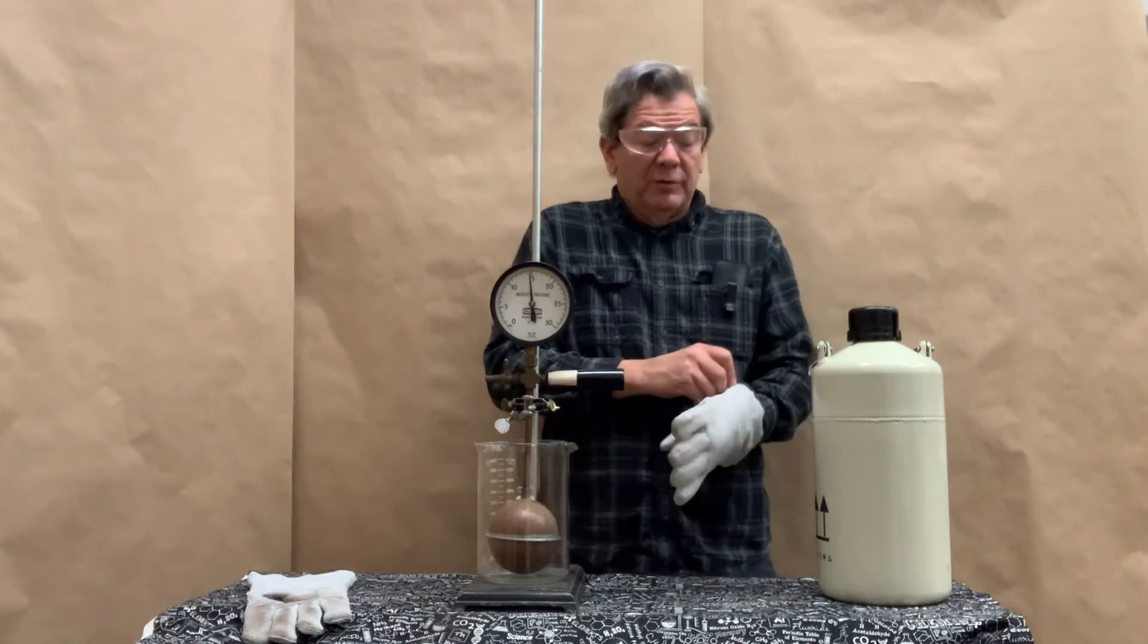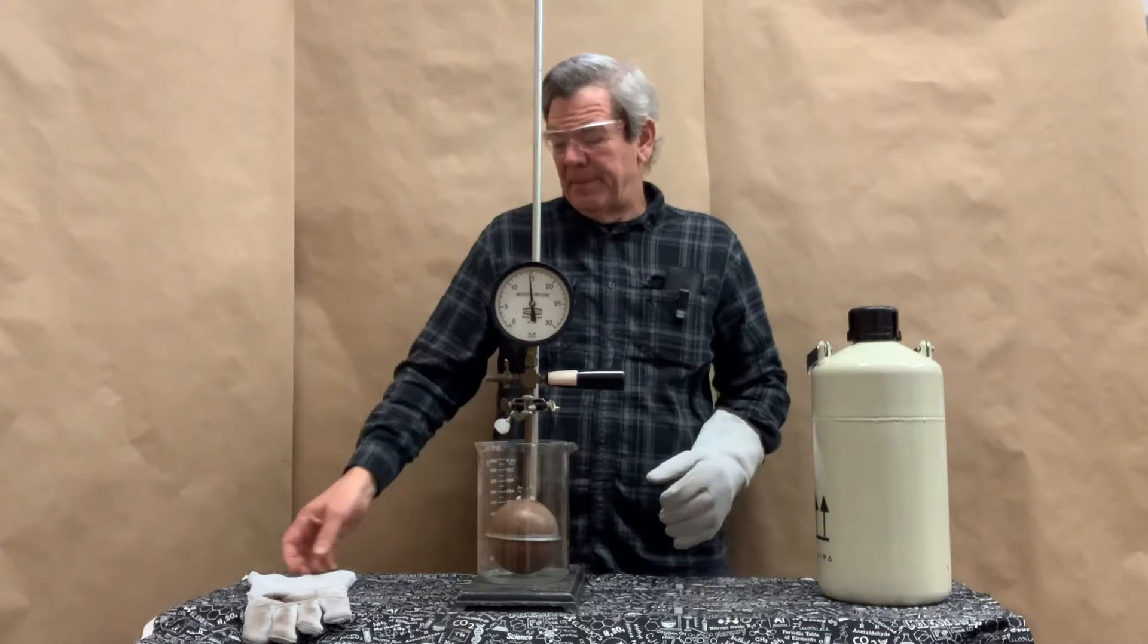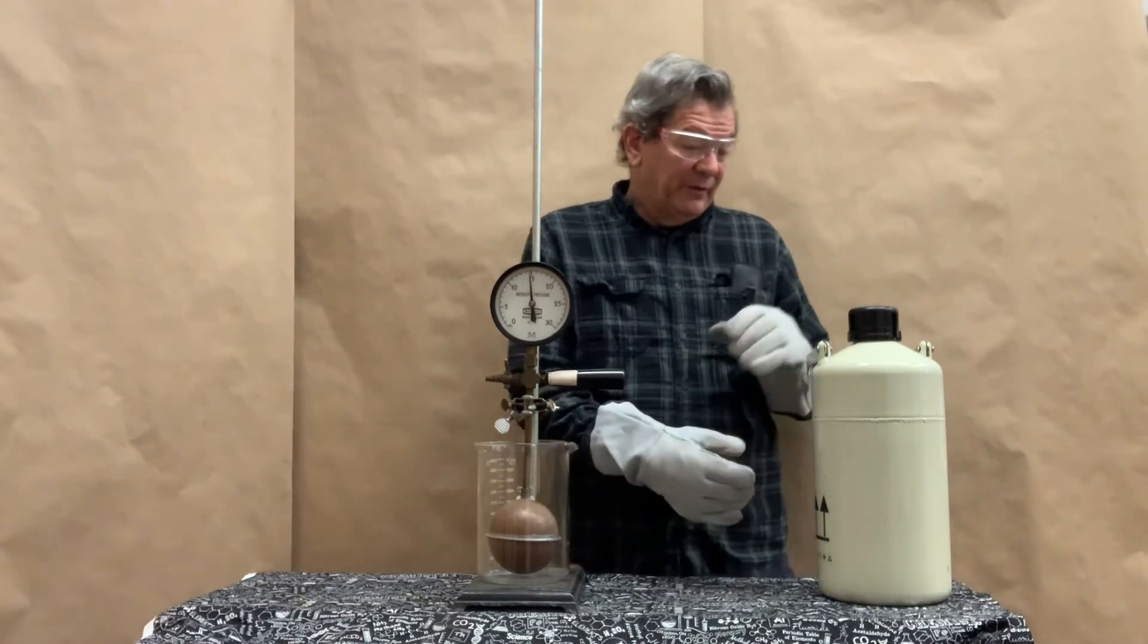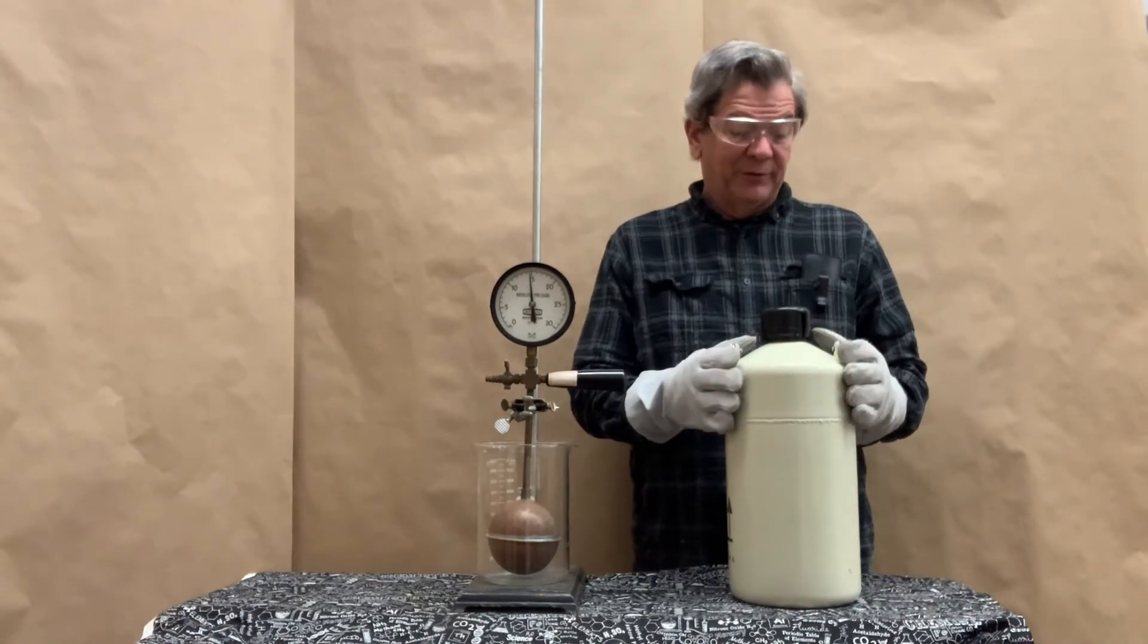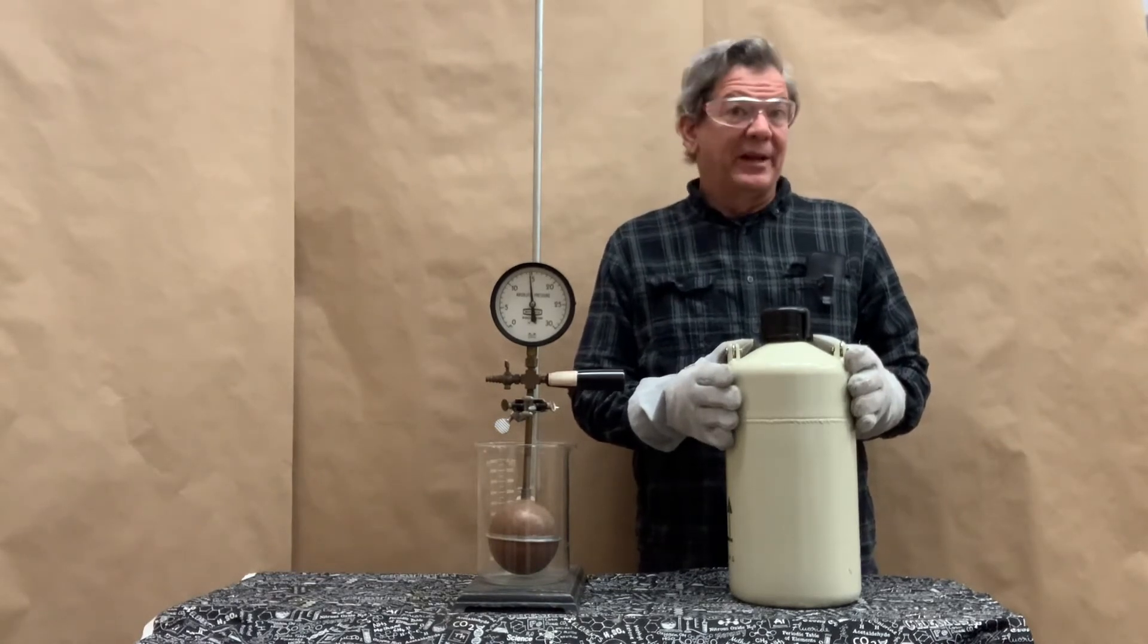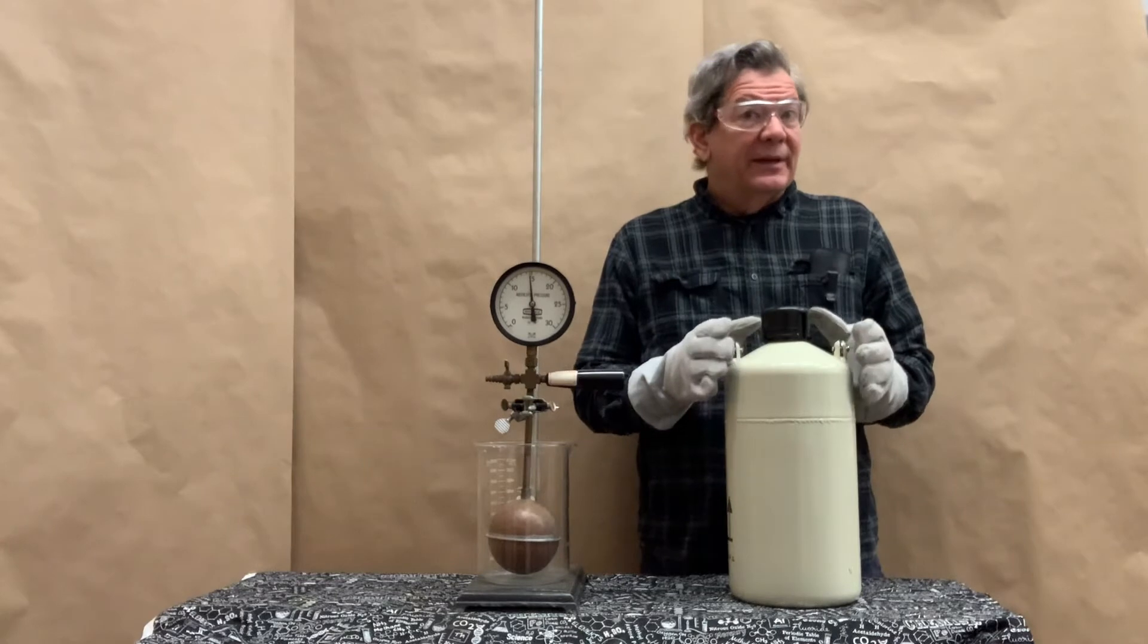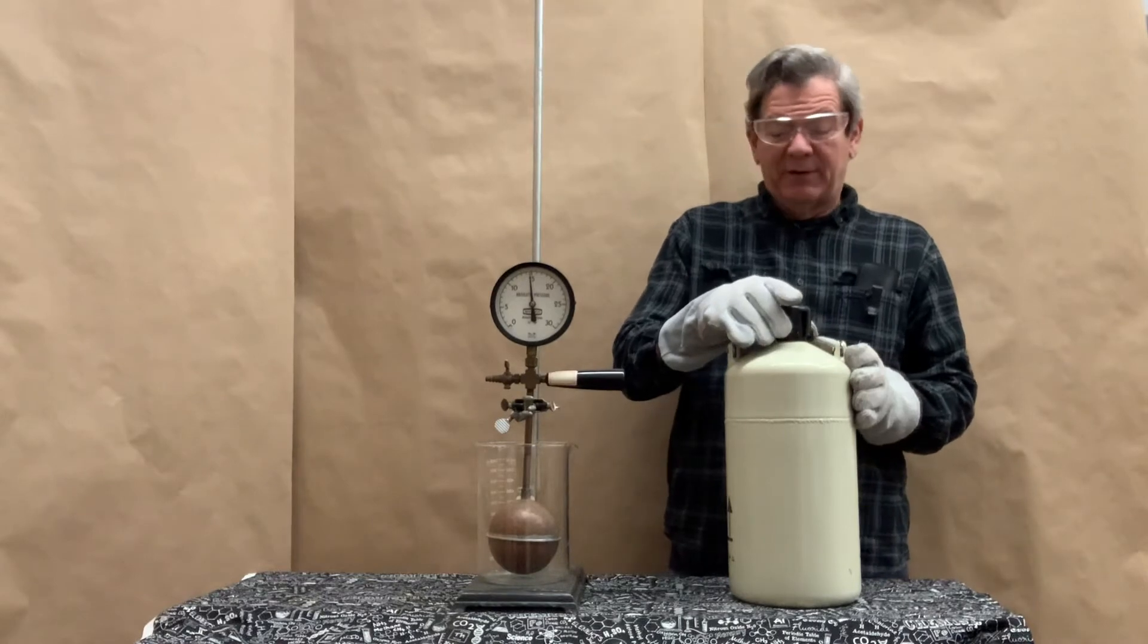In this Dewar flask right here, very highly insulated vessel, I have some liquid nitrogen. Nitrogen, which is the main constituent of air, most of air, close to 80% of it, is nitrogen gas. Nitrogen gas, when you get it down to about negative 195 degrees Celsius, condenses, turns into a liquid. So its boiling point at atmospheric pressure is about negative 195 degrees Celsius. And I'm pretty sure that's the temperature we're at right here.